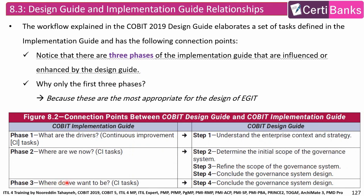Phase three in the Implementation Guide — where do we want to be? — is related to the last step in the COBIT Design Guide, which is to conclude the governance system design.